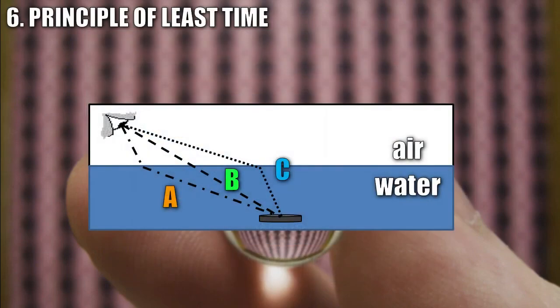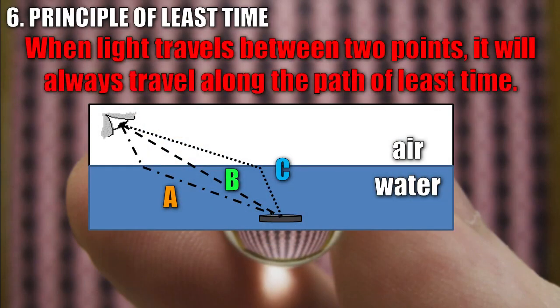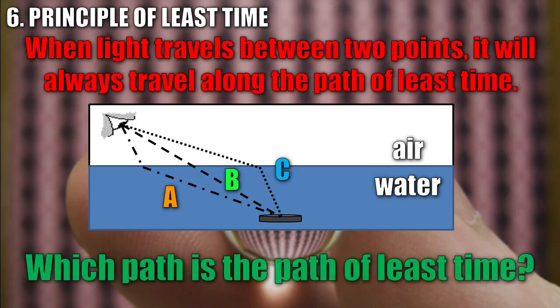Refraction can be understood by using the principle of least time, which states that when light travels between two points, it will always travel along the path of least time. The question is, which of these paths, A, B, or C, is the path of least time? Remember, the speed of light in water is much slower than it is in air.